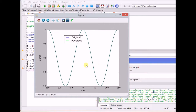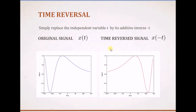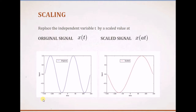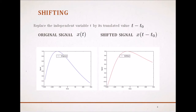To summarize, we looked at three important transformations of signals. First, time reversal — we obtain the reflection of the signal by replacing t with negative t. Second, scaling — we replace t with a times t, where the scaling factor a can be greater than or less than one. Finally, shifting — we replace t with t minus t-naught, where t-naught is the time shift, moving the original signal from its current location to a new location in time. Thanks for watching.